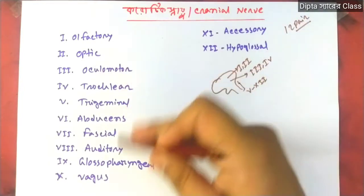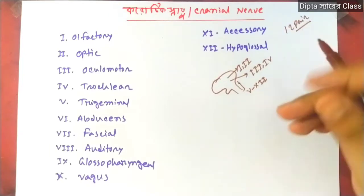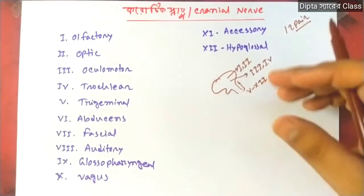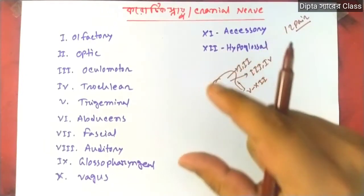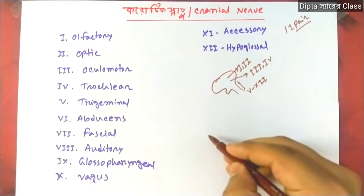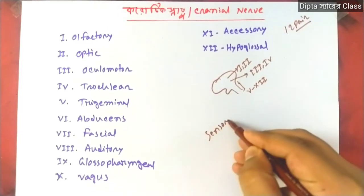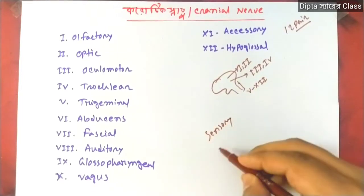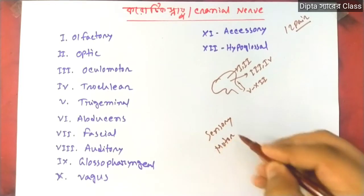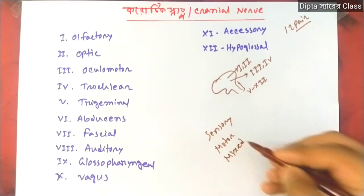These are the functional models of cranial nerves. One type is sensory, one is motor, and one is mixed.